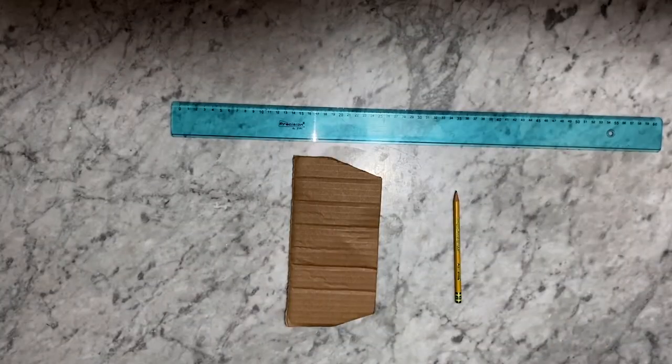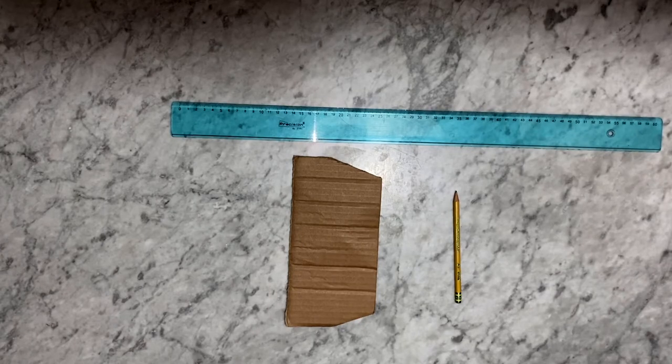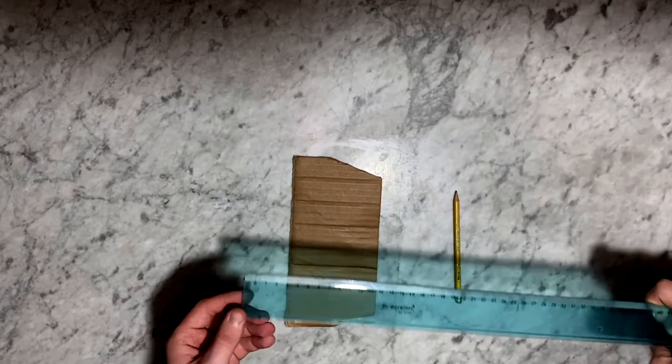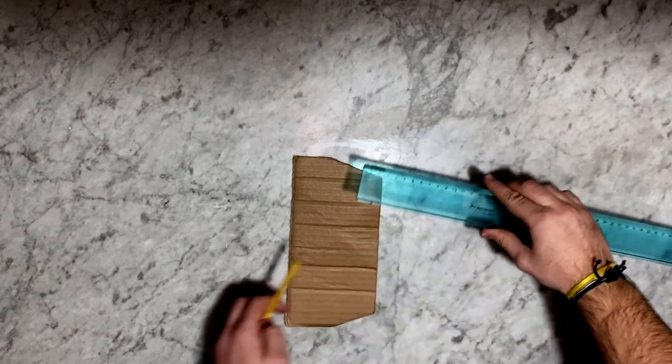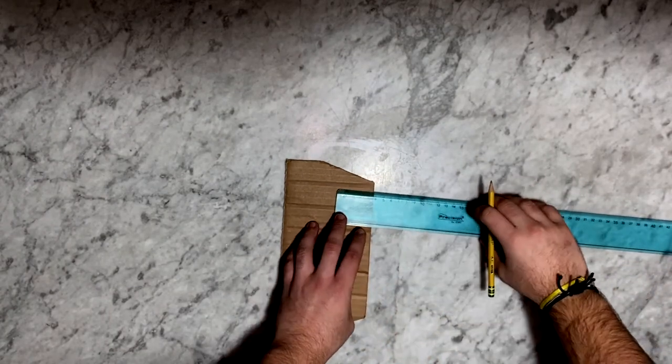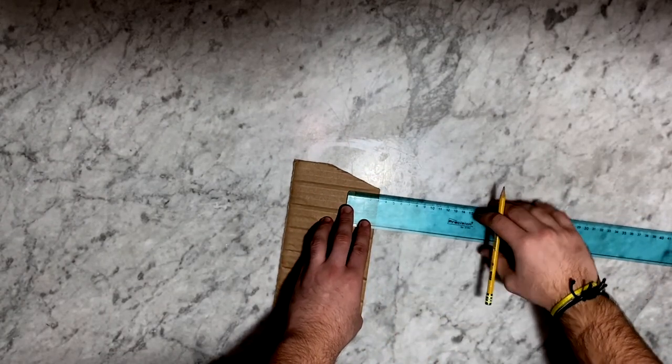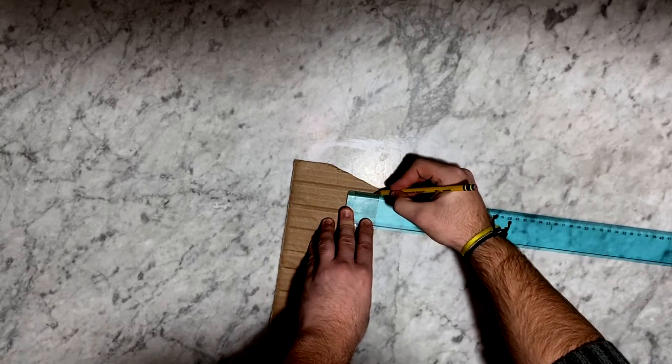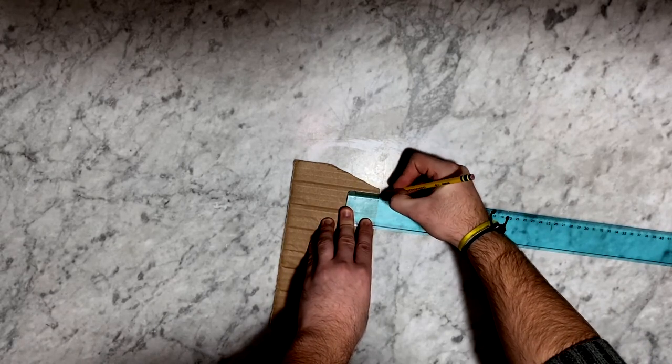The first thing to do is to draw and cut out some rectangles 3 cm wide and 15 cm tall. The number of rectangles depends on which shape we want to make: 3 for a triangle, 4 for a square, etc.